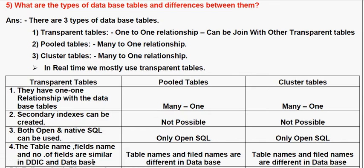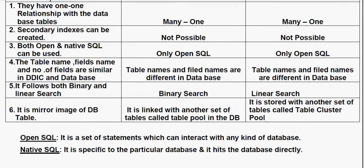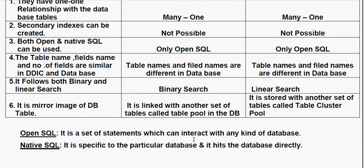In a transparent table, the table name, field name, and number of fields are similar in both the database and the data dictionary structure. In the case of the pool table, the table name and field name are different in the database. In a cluster table, it supports both binary and linear search.